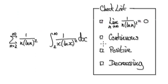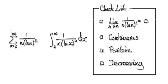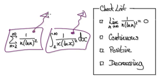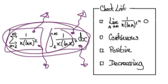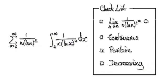So that's good. Second part: check that this function is continuous. Because ultimately we want to compare the series to the integral. There's a theorem that says if the integral diverges, the series will also diverge; if the integral converges, the series will converge. But in order to use that theorem, we need to check these three conditions. The first is to check that it's continuous.